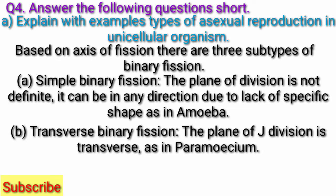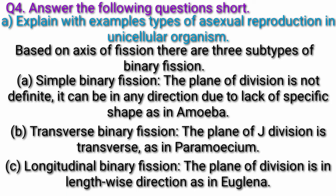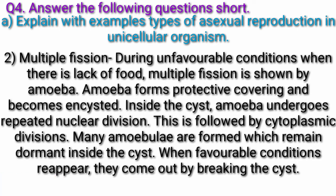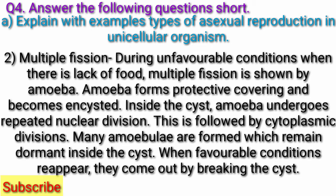B. Transverse binary fission — the plane of division is transverse, as in paramecium. C. Longitudinal binary fission — the plane of division is in the lengthwise direction, as in euglena. Second, Multiple Fission: during unfavorable conditions when there is lack of food, multiple fission is shown by amoeba. Amoeba forms a protective covering and becomes encysted. Inside the cyst, amoeba undergoes repeated nuclear division followed by cytoplasmic divisions. Many amoebae are formed, which remain dormant inside the cyst. When favorable conditions reappear, they come out by breaking the cyst.